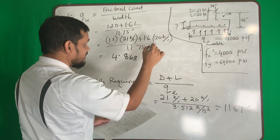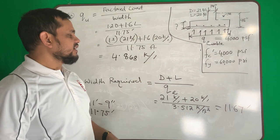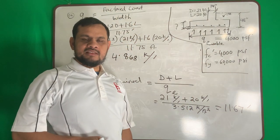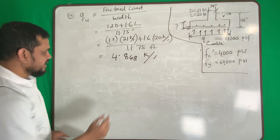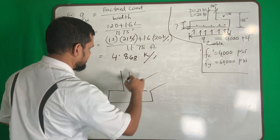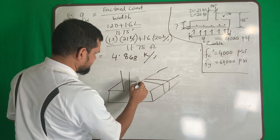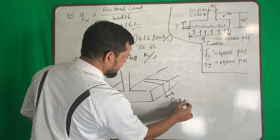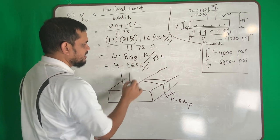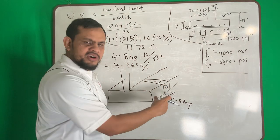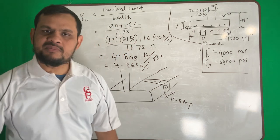The result is q_u = 4.868 kip per feet. We work with kip per feet because we take a one-foot strip of the footing — since the wall is continuous and the length may be 20, 30, or 50 feet, we just design the one-foot strip and then replicate the reinforcement along the full length.